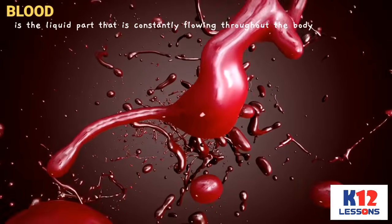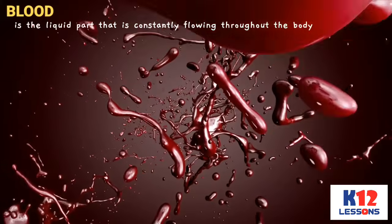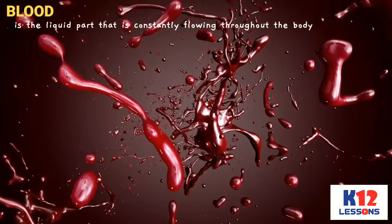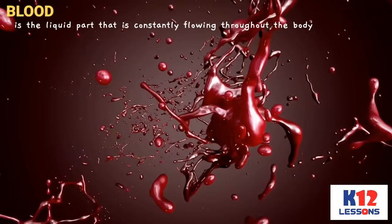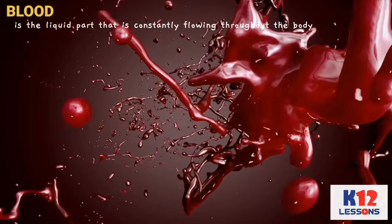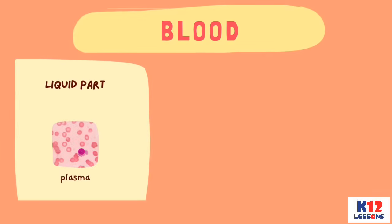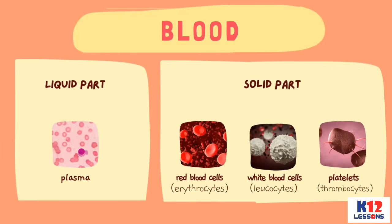Blood is the liquid part that is constantly flowing throughout the body. It is composed of a liquid part called plasma, and solid formed components which are the red blood cells, white blood cells, and platelets.